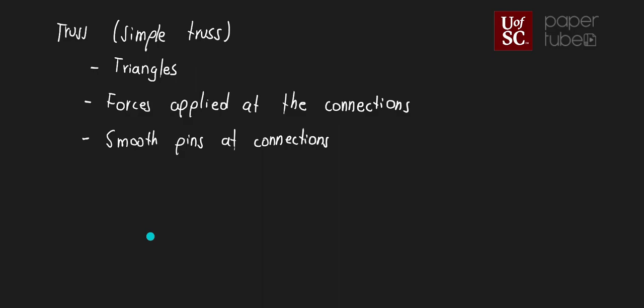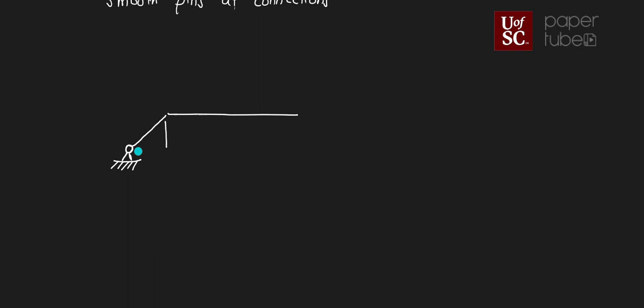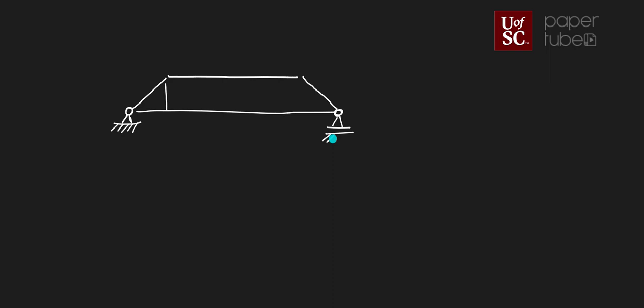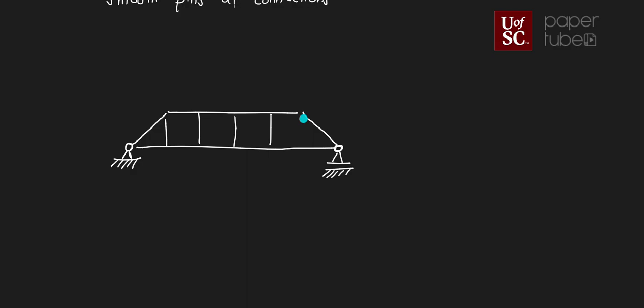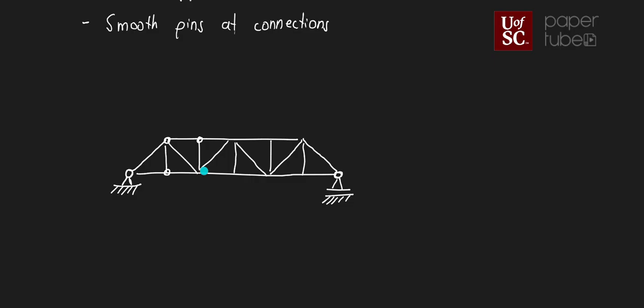Let's do a diagram of what these trusses look like. These are the ones you might have seen driving down the highway — some of the old bridges. Those are usually simple trusses, so let's say a bridge that looks something like this would be a simple truss.